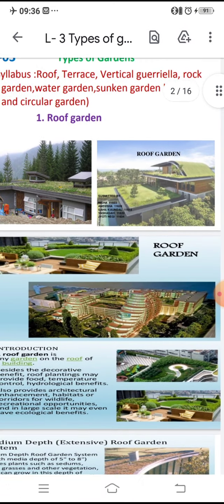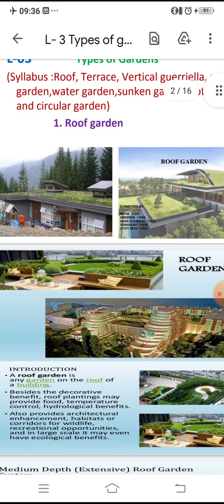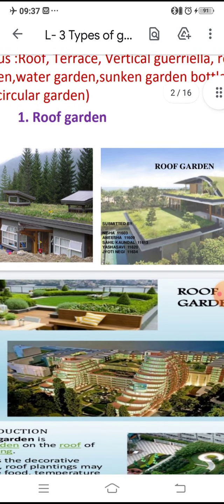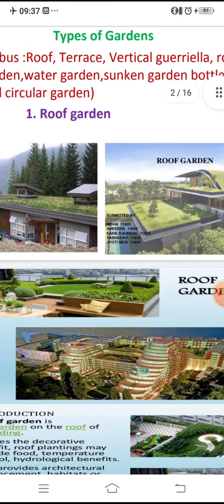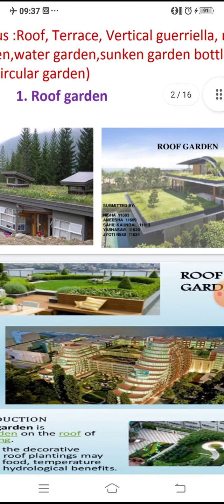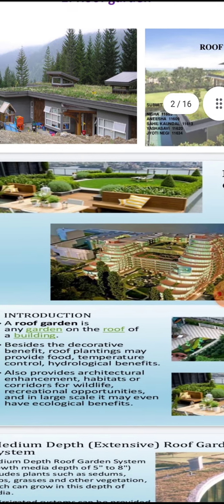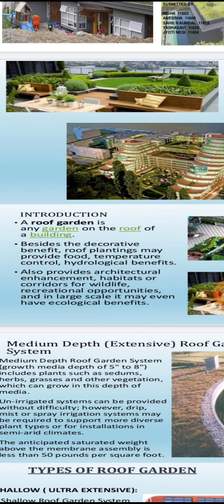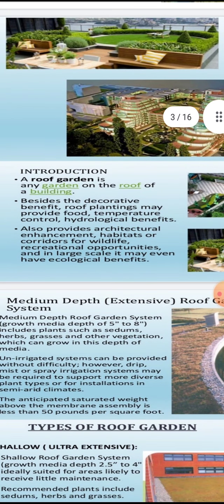Here you are observing nice pictures of the home terrace. Terrace means the upper part of the home. Generally in foreign countries and now in our well-developed cities like Mumbai, Kolkata, Chennai, and Hyderabad, such developments are there. So first we look at the roof garden — you are observing these good photographs.